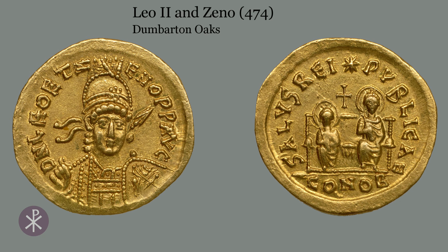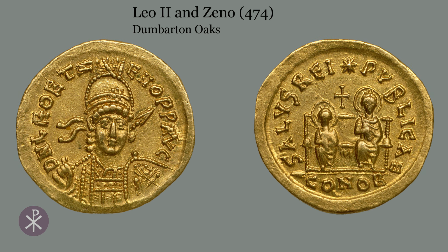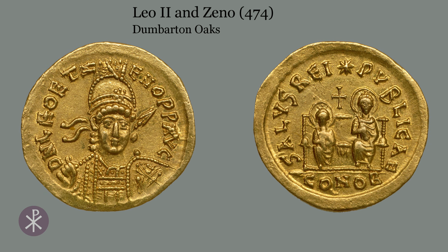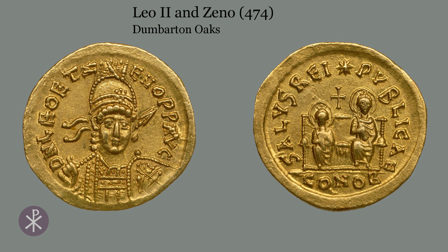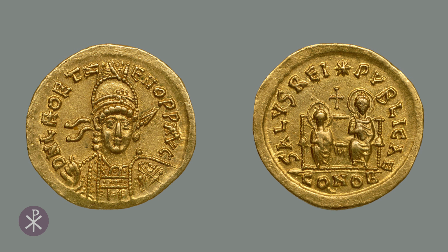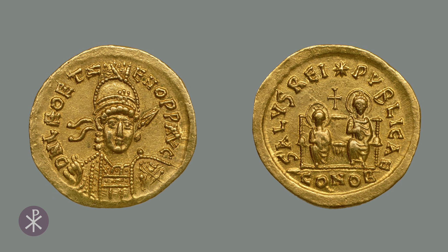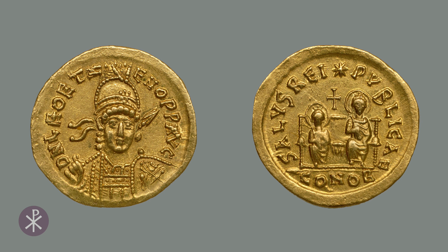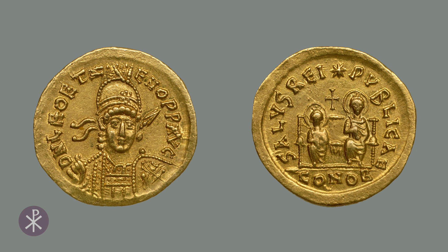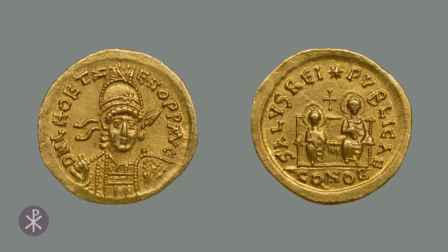When Leo I died in 474, his young grandson Leo II, son of Ariadne, briefly ruled before he also died later that year. Ariadne's husband Zeno, formerly the head of the imperial guard, then became emperor.